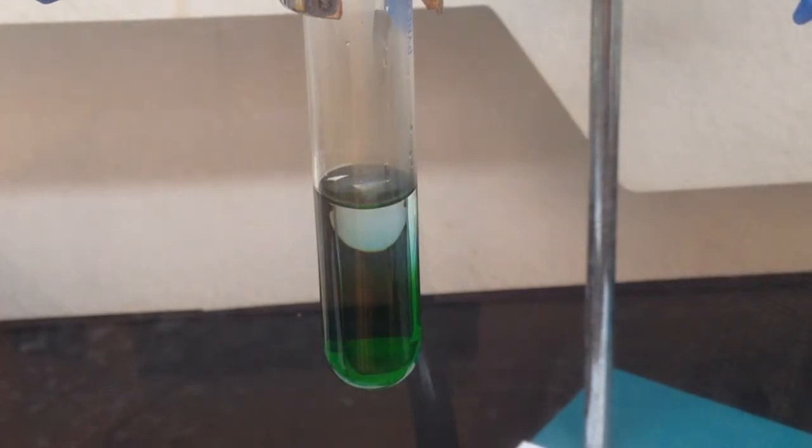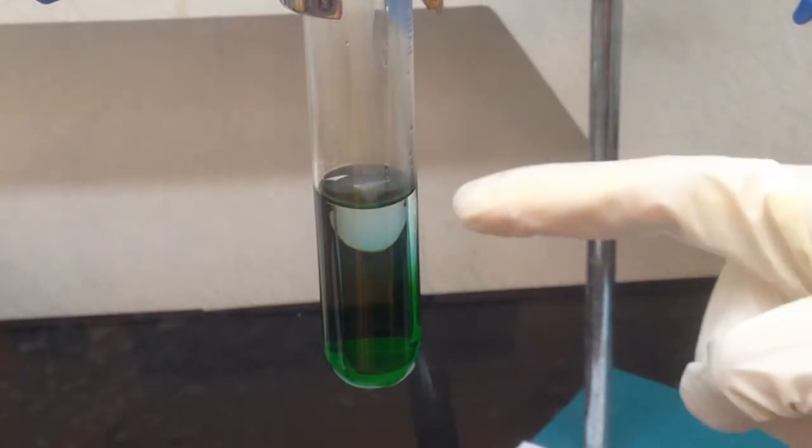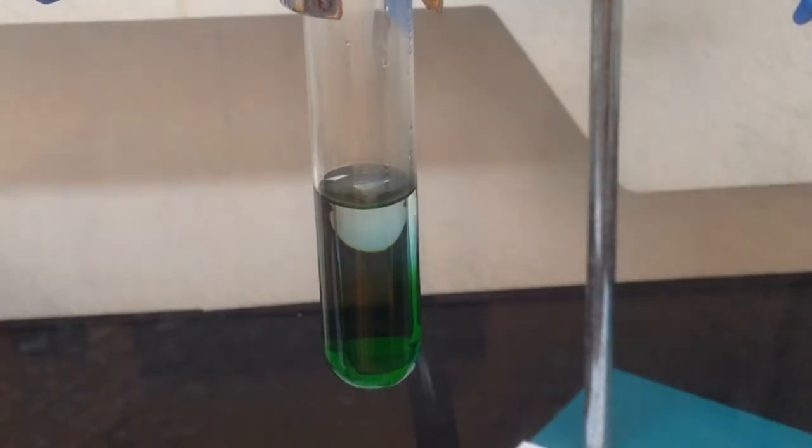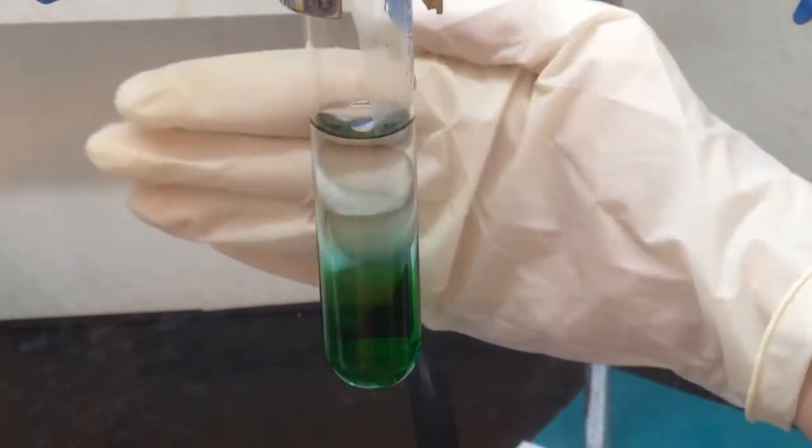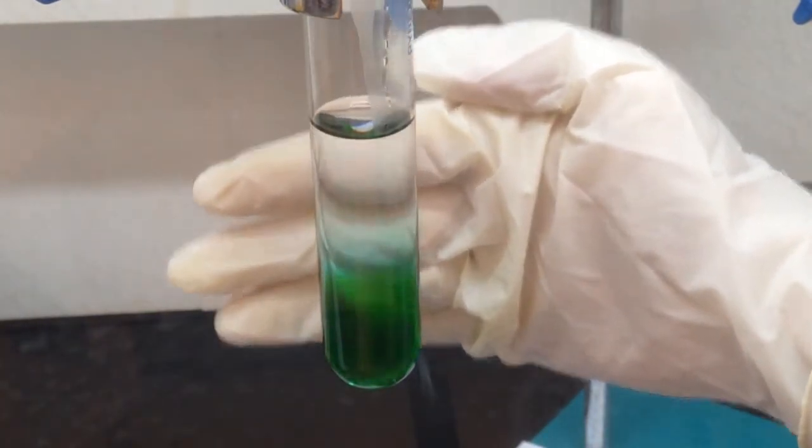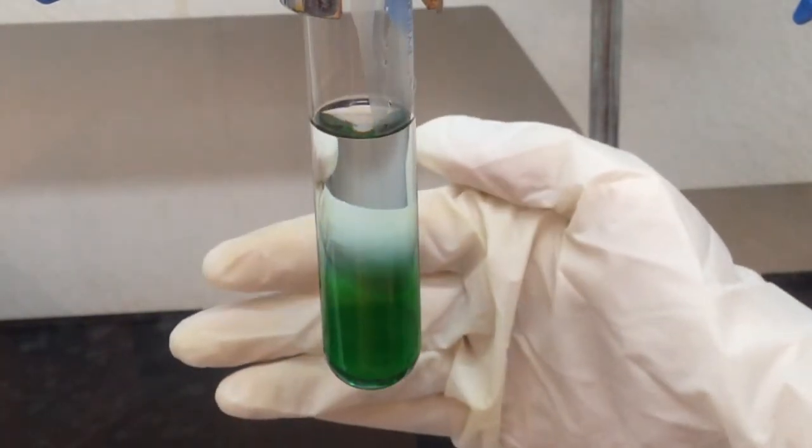Once we add some water, the upper part becomes a little bit blue, and the lower part is still green because most of the water is staying at the upper part. Once we add more water, the blue color becomes more visible.